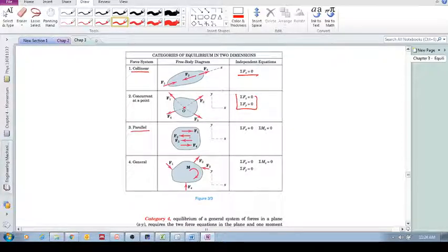Parallel force system. As you can see in this case, there's no forces that are perpendicular to these. So all we need is sum of the forces in this direction, equal to zero. And we also need to satisfy sum of the moments about the z-axis, equal to zero.